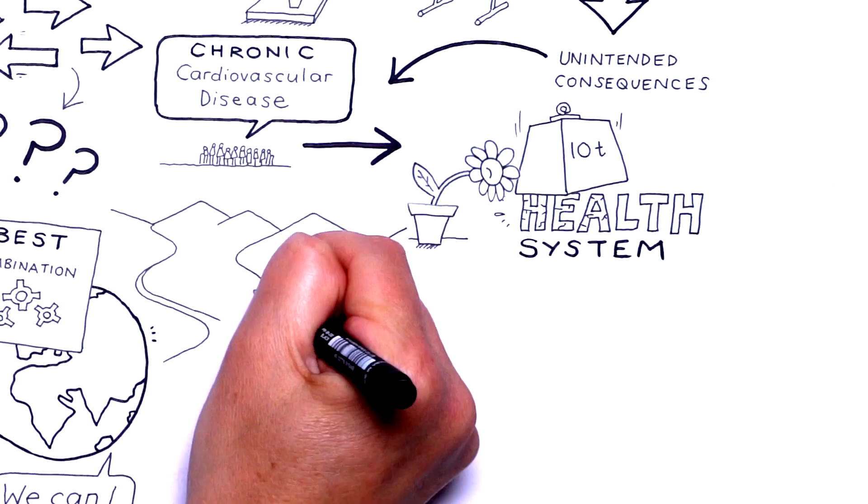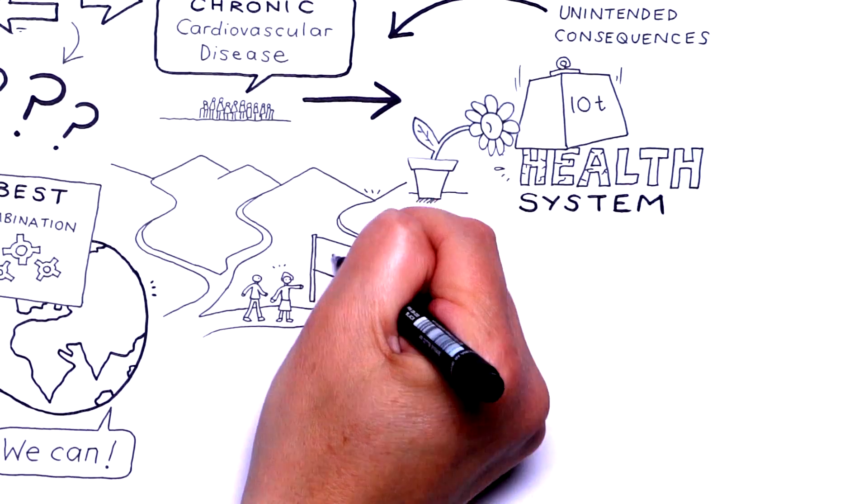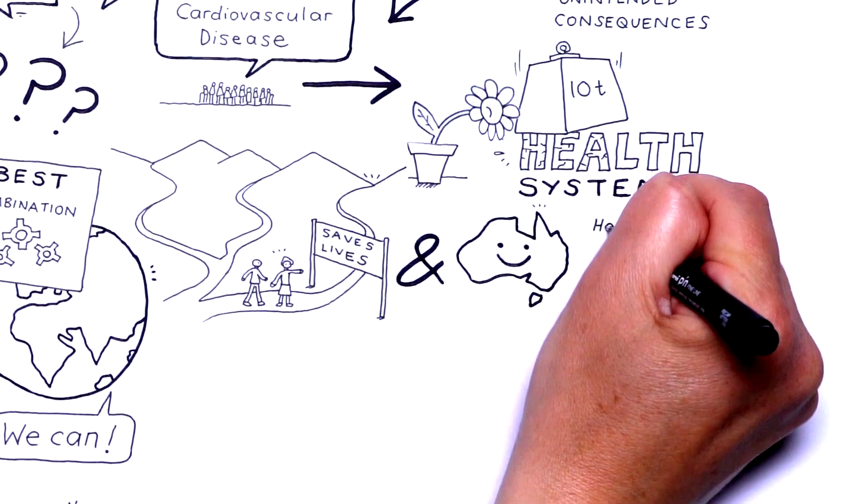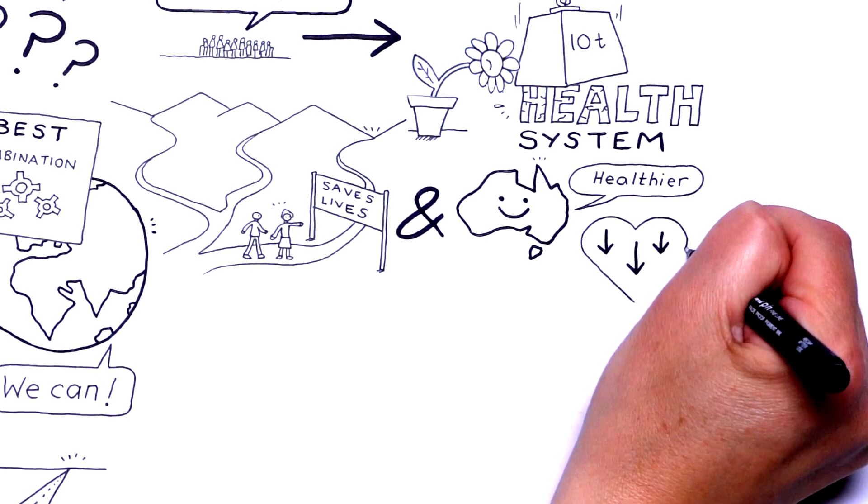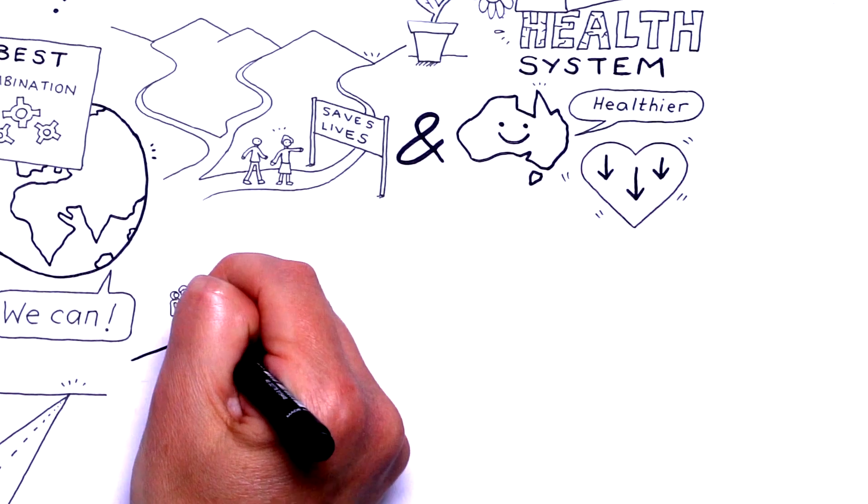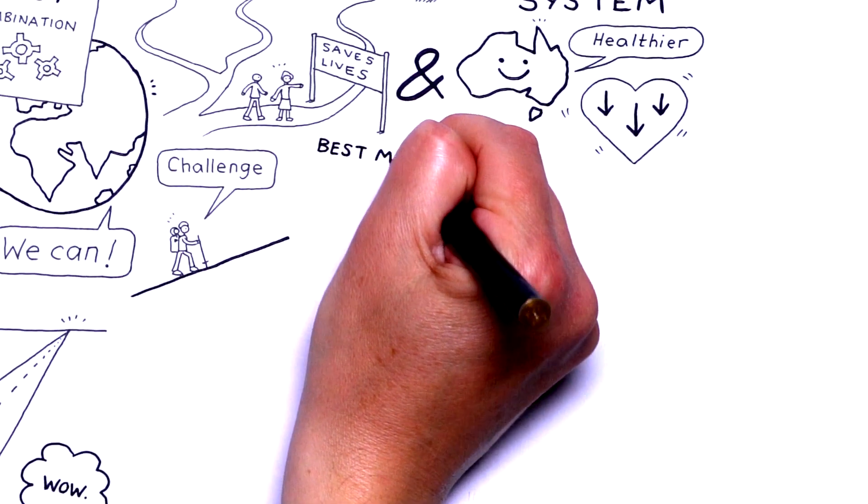We must choose a path that saves lives and keeps Australians healthier if we're to reduce the preventable burden of cardiovascular disease. Our challenge is to select the best mix of actions,